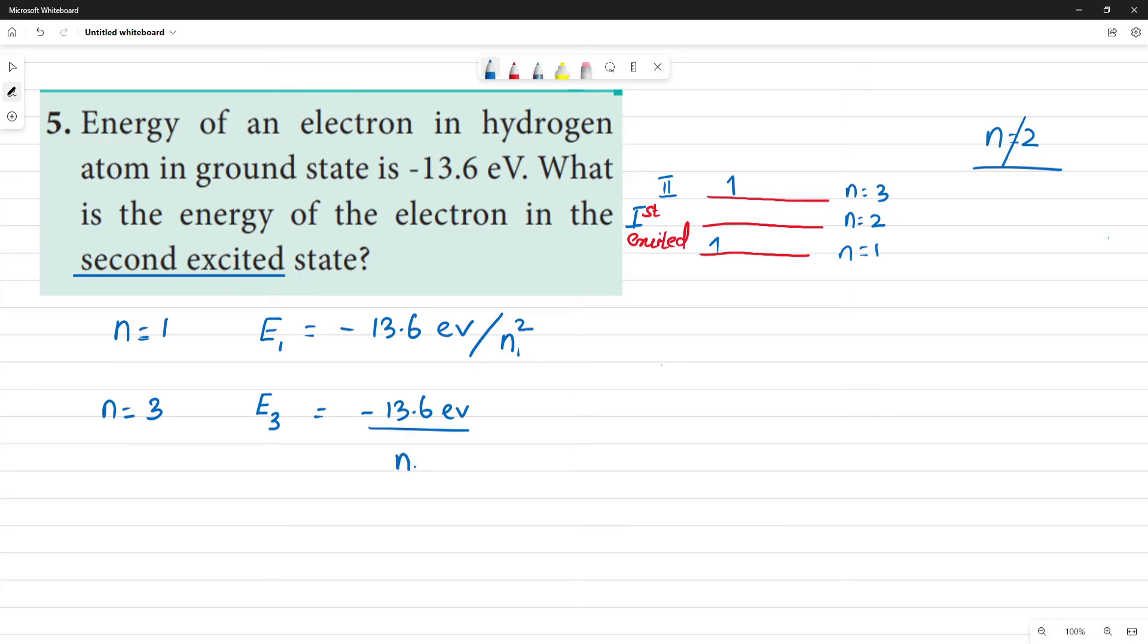Yengarukk n² square pahadu pahadu pahadu, here n value is 3. So, minus 13.6 electron volt by 3 square. That will be equal to minus 13.6 divided by 9.